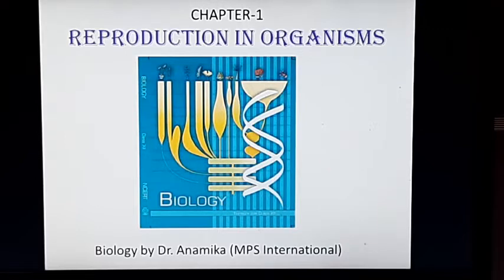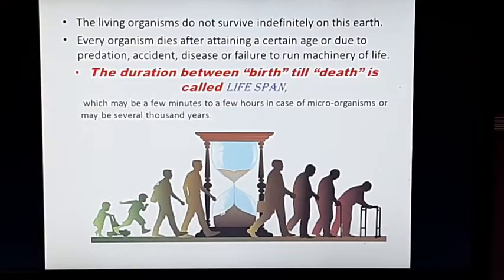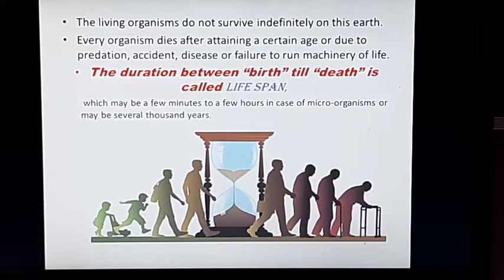When we talk about reproduction, it is a fundamental feature of every living organism, either unicellular or multicellular. Reproduction is a process which helps the organism to continue their survival on this earth. Every organism on this earth is not able to survive indefinitely. Every organism dies after attaining a certain age, either due to predation, an accident, disease, or failure of organs. The time period from the organism's birth till its death, we call that time period the lifespan.